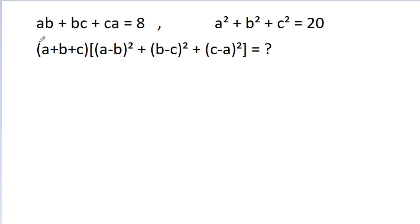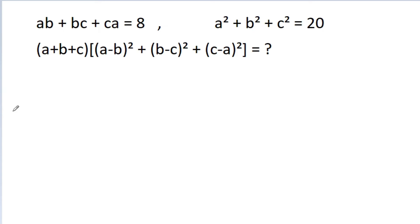In this video, we have given that ab plus bc plus ca is equal to 8 and a square plus b square plus c square is equal to 20. Then we have to find the value of a plus b plus c times a minus b whole square plus b minus c whole square plus c minus a whole square.